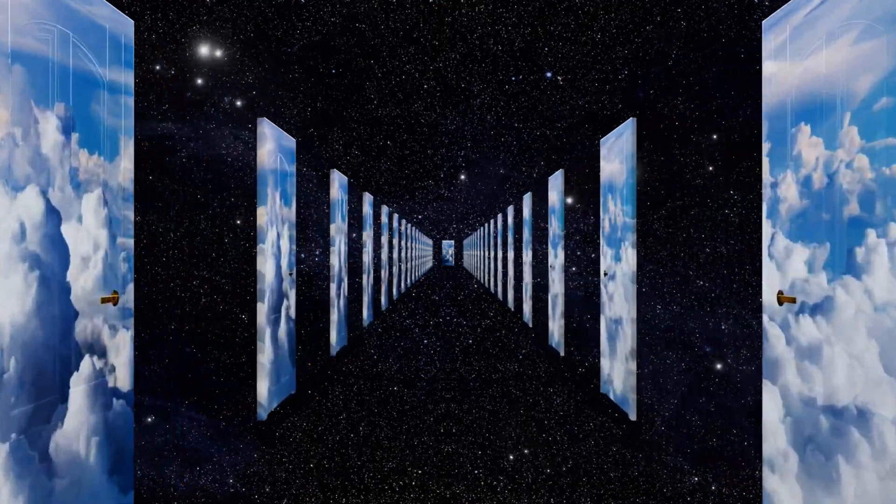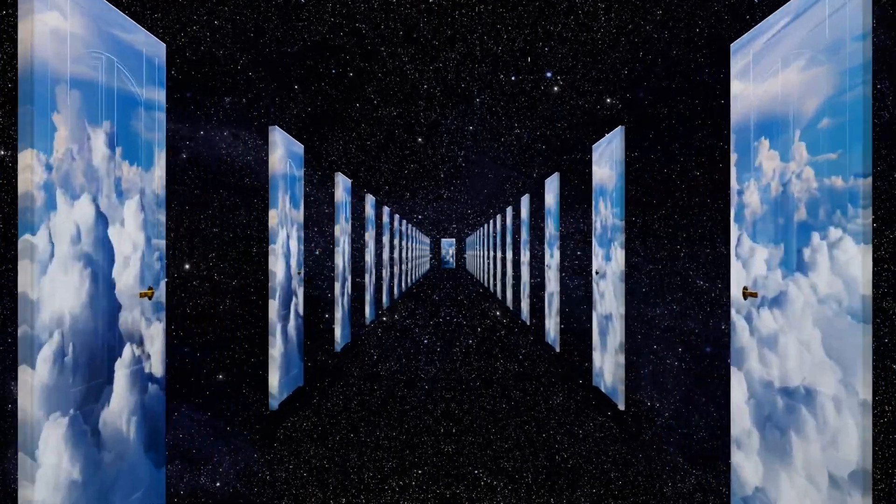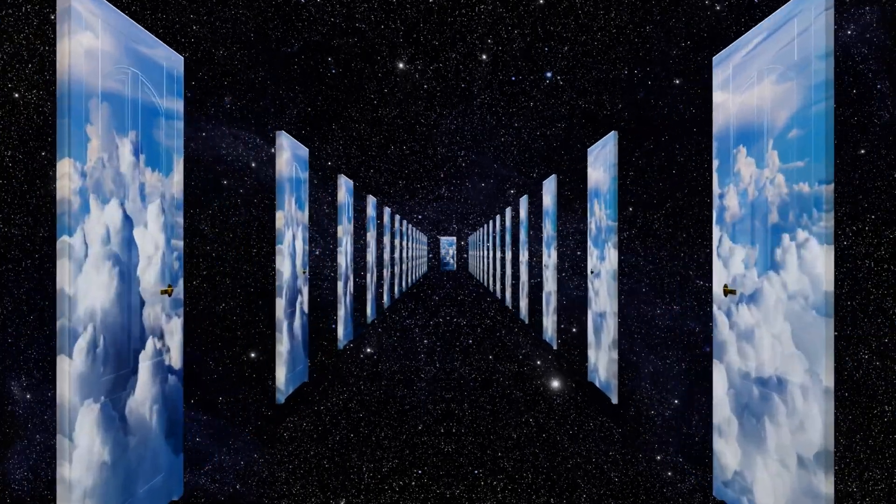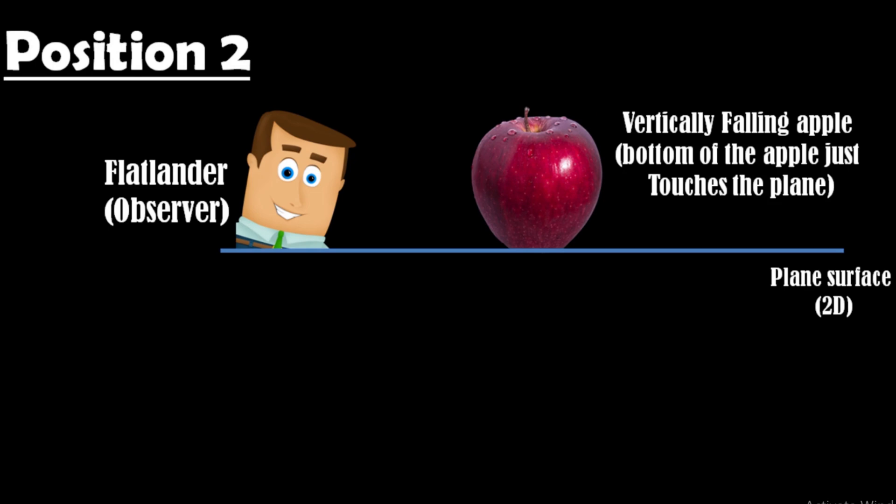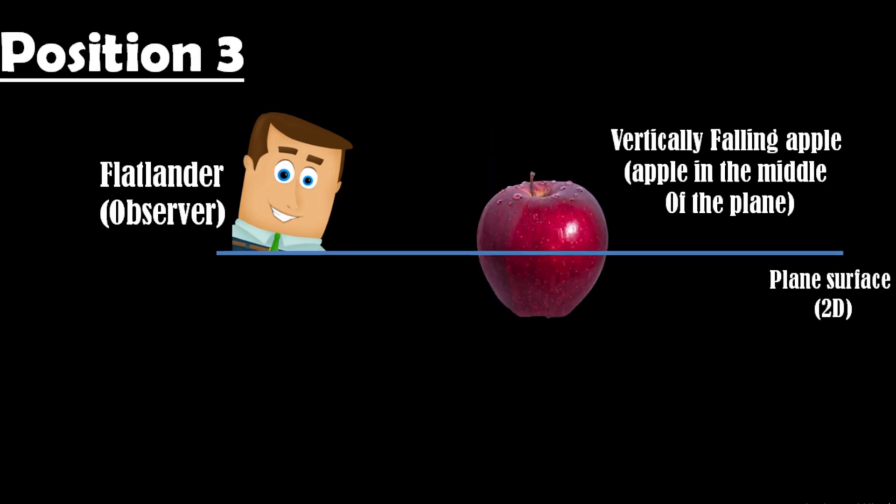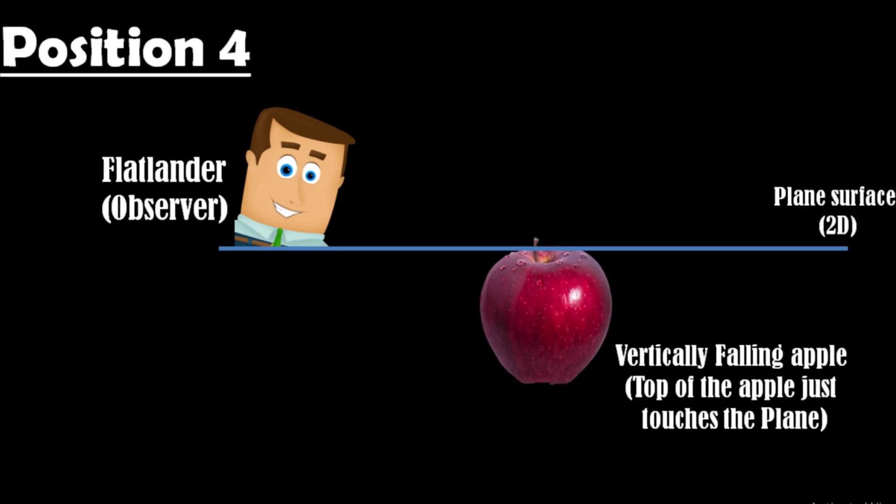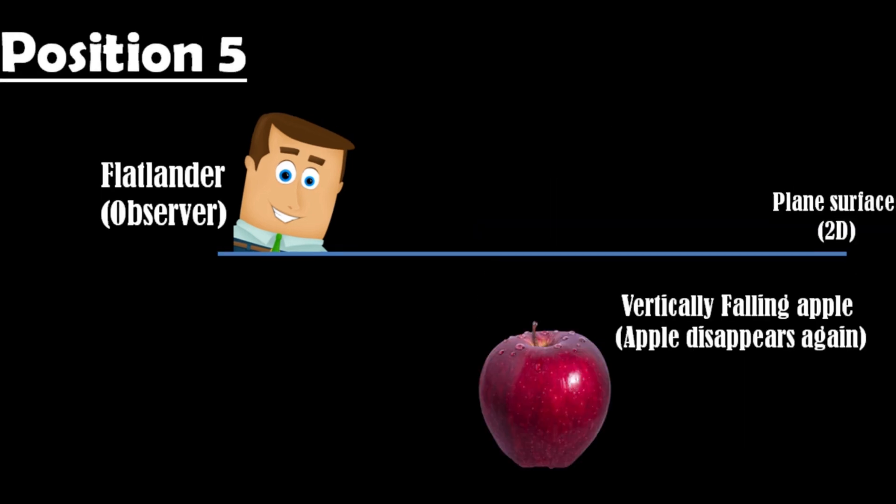Let's now explore the idea of the fourth dimension using an example of cross-sections. If a three-dimensional object, like an apple, passes through a 2D plane, the Flatlanders would see a series of 2D slices of the apple. When the apple first touches their plane, it appears as a small dot. As it passes through, the dot grows into a circle, reaches its maximum size, and then shrinks back to a dot before disappearing.